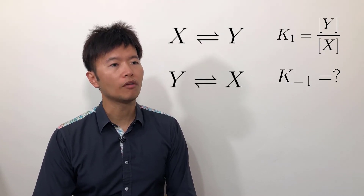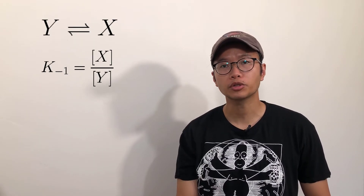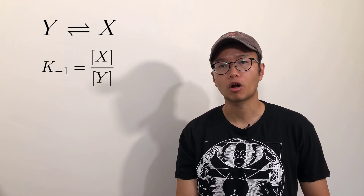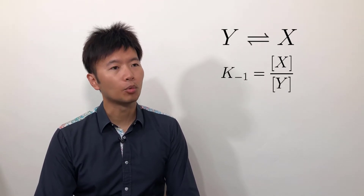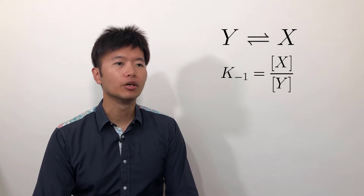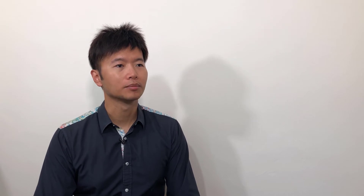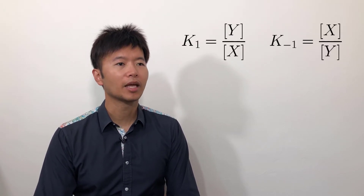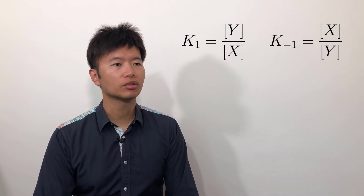It would be the concentration of x over the concentration of y. Correct. We will write k-1, indicating the reverse reaction, equals the concentration of x over the concentration of y. Notice that k1 and k-1 are slightly different.